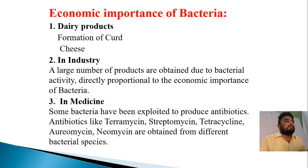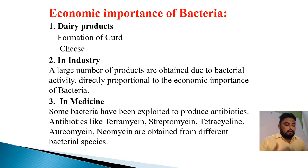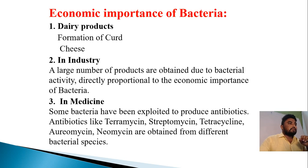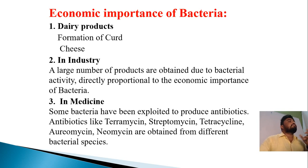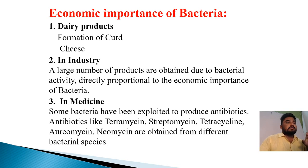Next is the economic importance of bacteria. Bacteria are used in many industries. The first is dairy products, such as the formation of curds — for example, curd and milk use Lactobacillus bacteria. In industry, a large number of products are obtained due to bacterial activity, directly related to the economic importance of bacteria. In medicine, some bacteria have been exploited to produce antibiotics such as tetramycin, streptomycin, tetracycline, aeromycin, and neomycin, which are obtained from different bacterial species.